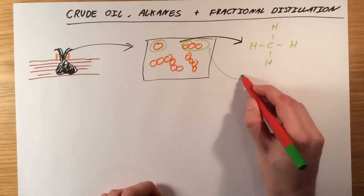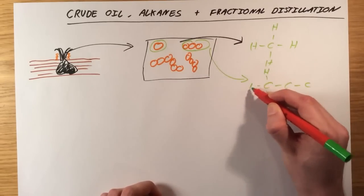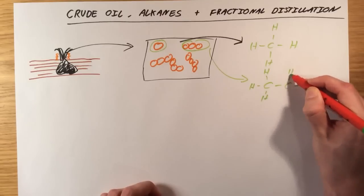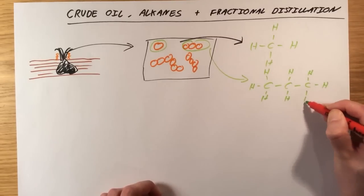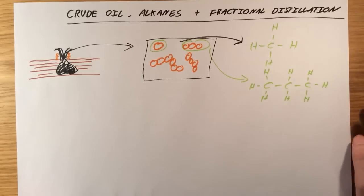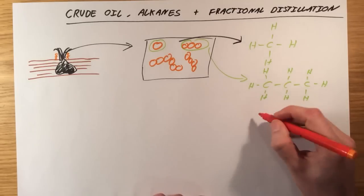If I were to draw this one properly, I would draw three carbon atoms. And around each carbon atom, I would make sure I have got four covalent, single covalent bonds. So crude oil is made up of a wide range of different compounds, but the majority of them are known as alkanes.